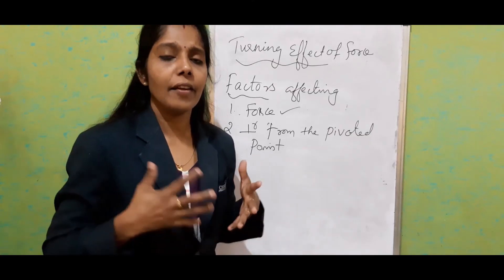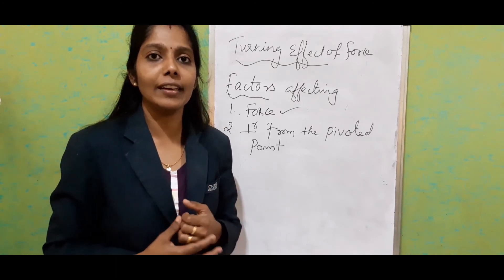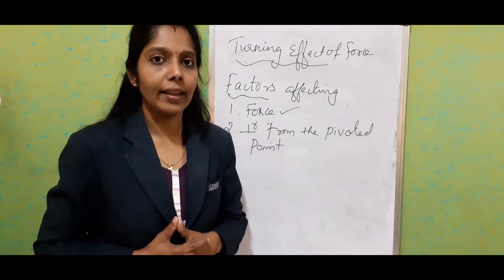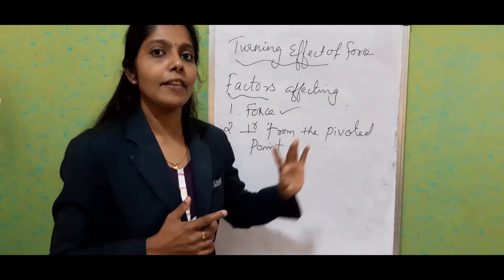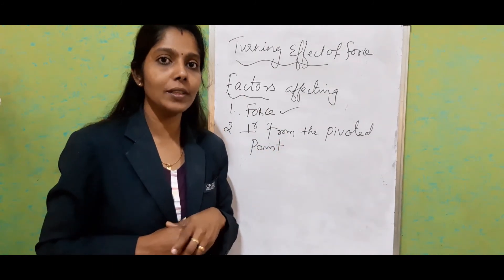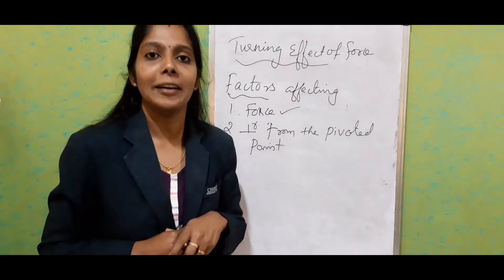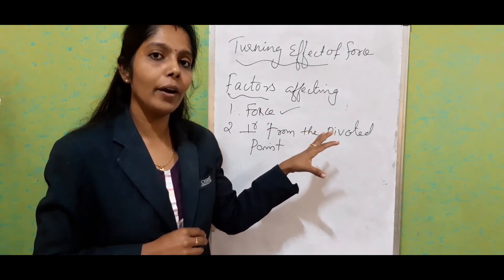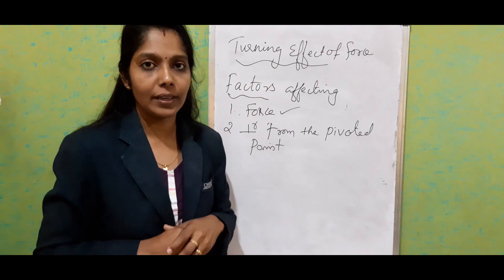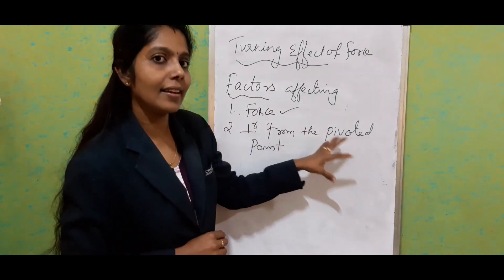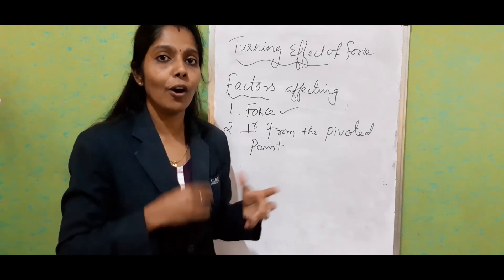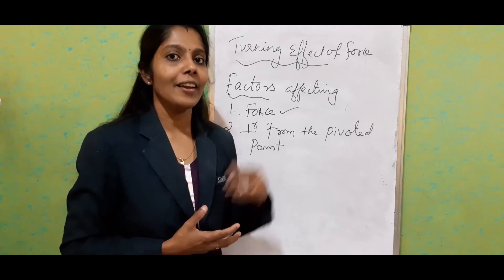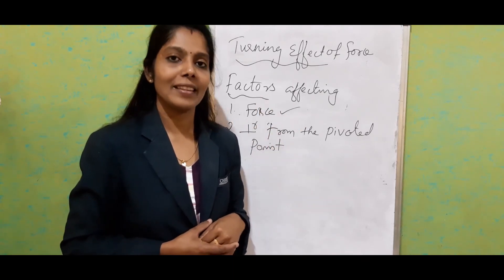These are some examples where we use the turning effect to reduce our work. We can conclude: as we increase the distance from the pivoted point to the application of force, we can reduce our effort. The magnitude of force and the distance between the pivoted point and the force are the factors which determine the turning effect. Find out more examples from your life wherever we require turning effect. Thank you.